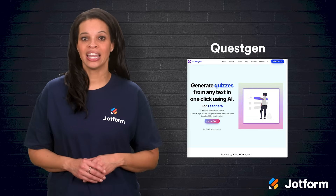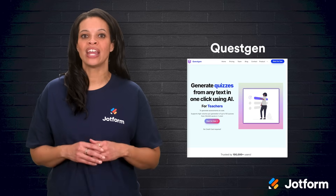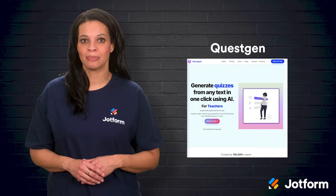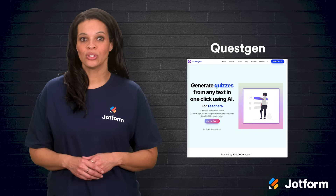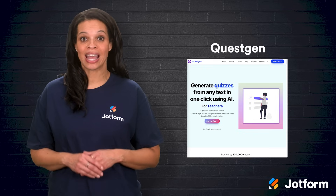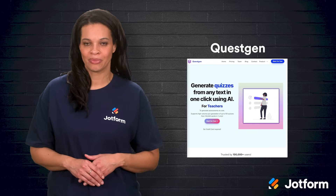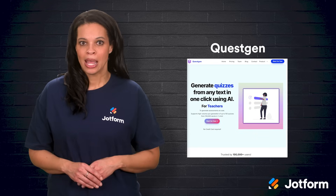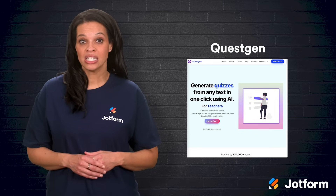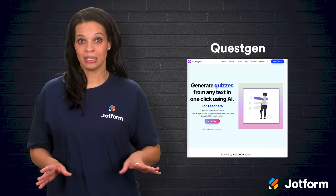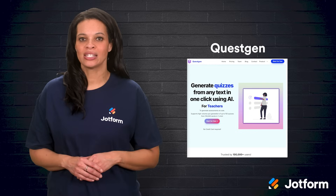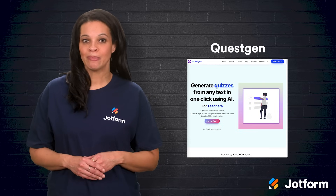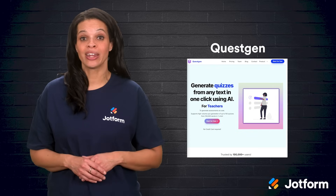Eighth on the list is QuestGen. In a single click, it can generate up to 150 quiz variations from text with multiple question types. You can set difficulty levels and edit or export quizzes as PDF or XML. The free version includes 20 generations, but the paid plan at $15 a month offers unlimited. It's a simple interface without too many extras, but the volume of questions generated can be a game-changer for teachers on a budget.